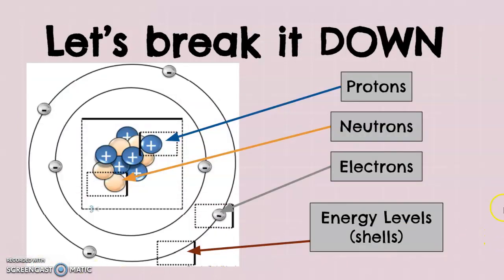Just as a reminder: we've got our protons in the middle, our neutrons in the middle as well in our nucleus, and then our electrons, which are negatively charged, exist in these energy shells outside. The positive protons and the neutrons are in the nucleus; the electrons are outside in the energy shells.